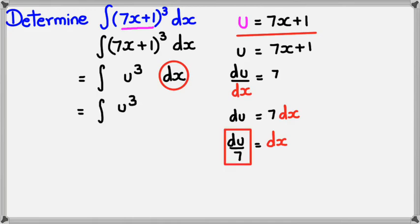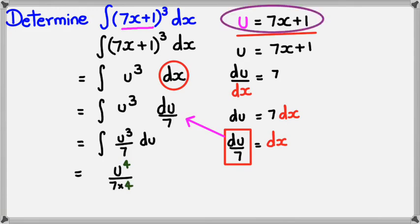And now it's just basic integration at this point because this would be ∫(u³/7)du. And if I integrate this I'm going to get u⁴/(7×4). Okay, so now what we can do is, because we know that u = 7x+1, we can substitute it back into u and finish off the function.